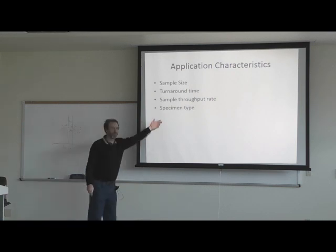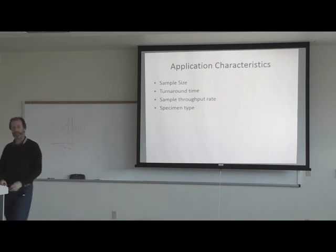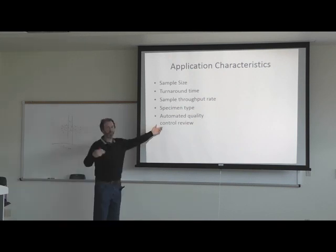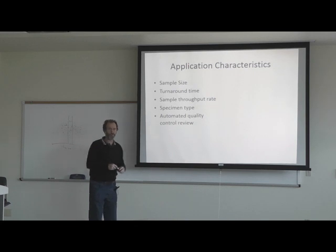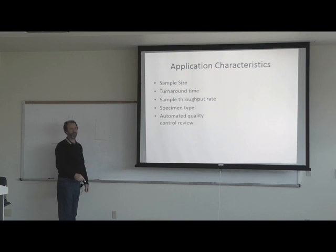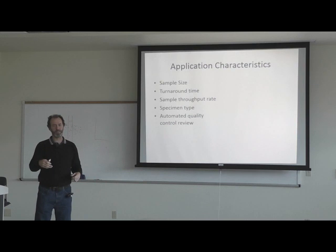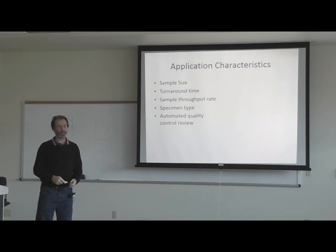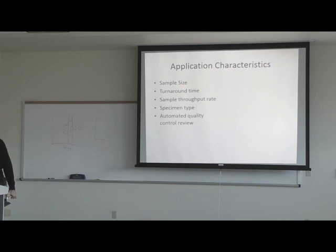You've also got to know what the specimen type is — serum, plasma, CSF, etc. A lot of these new methods have automated quality control. Rather than writing out Levy-Jennings charts manually, the computer that runs the machine keeps a Levy-Jennings chart in its file. When it fails Westgard rules, it will flag you — for example, a 1-3S rule violation, 2-2S, or R-4S.